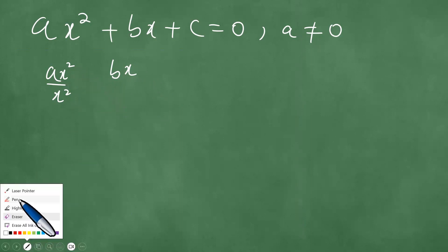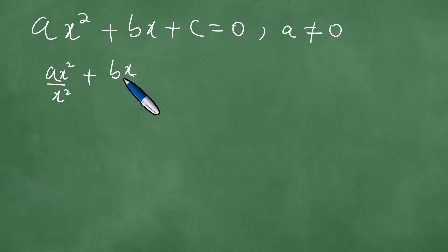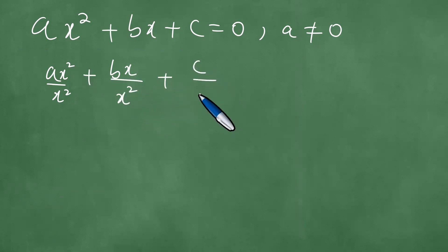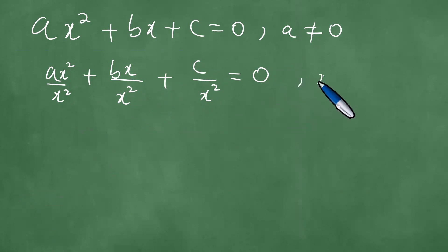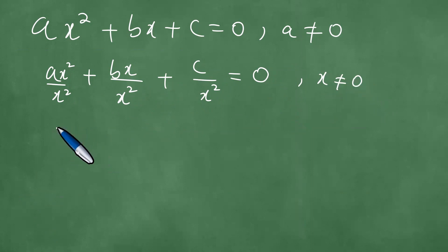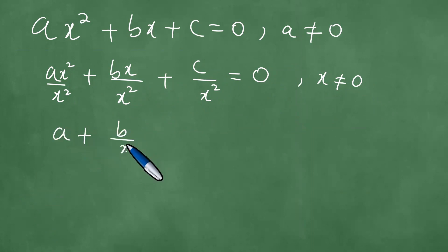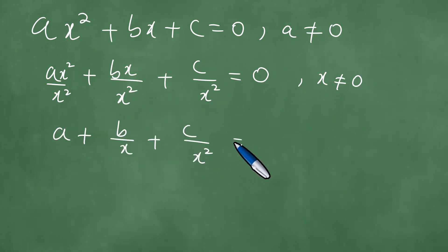To make it easier to understand: bx divided by x squared, plus c divided by x squared, with the result equal to 0. The understanding is that x is not 0 here. This gives us exactly a plus b over x plus c over x squared equals 0.